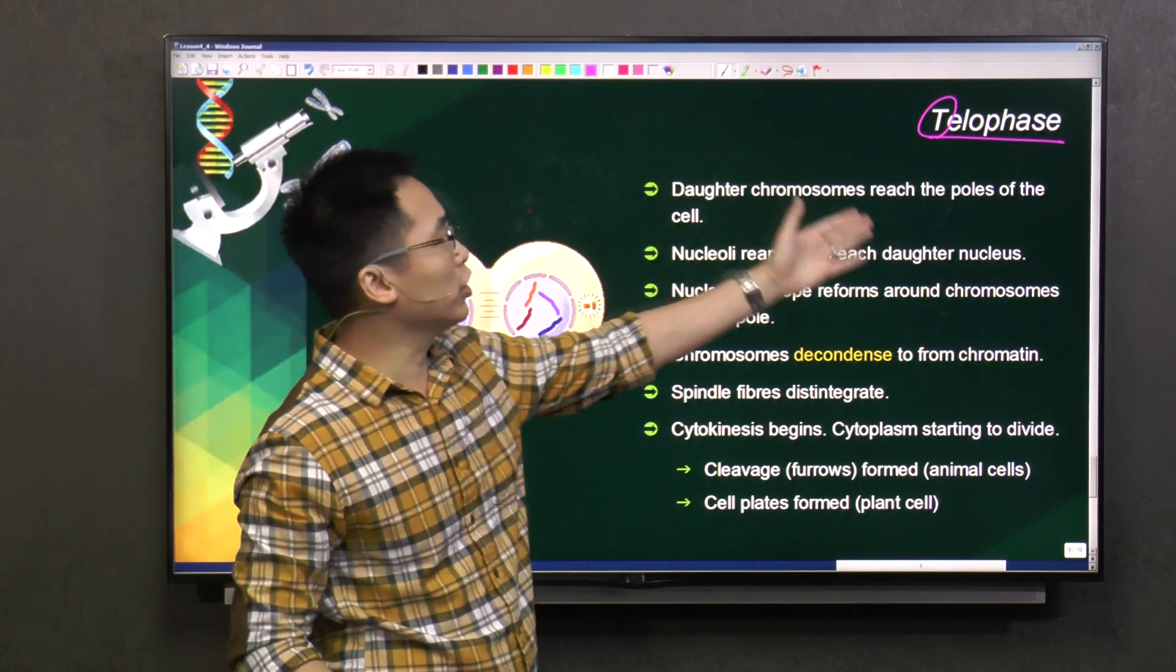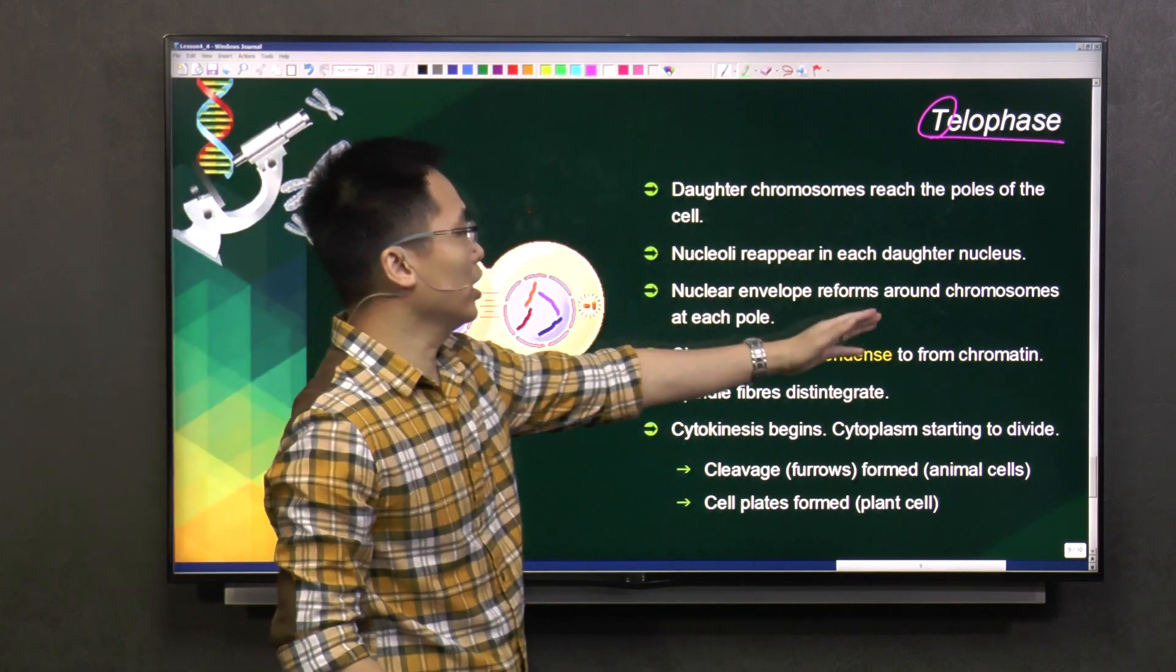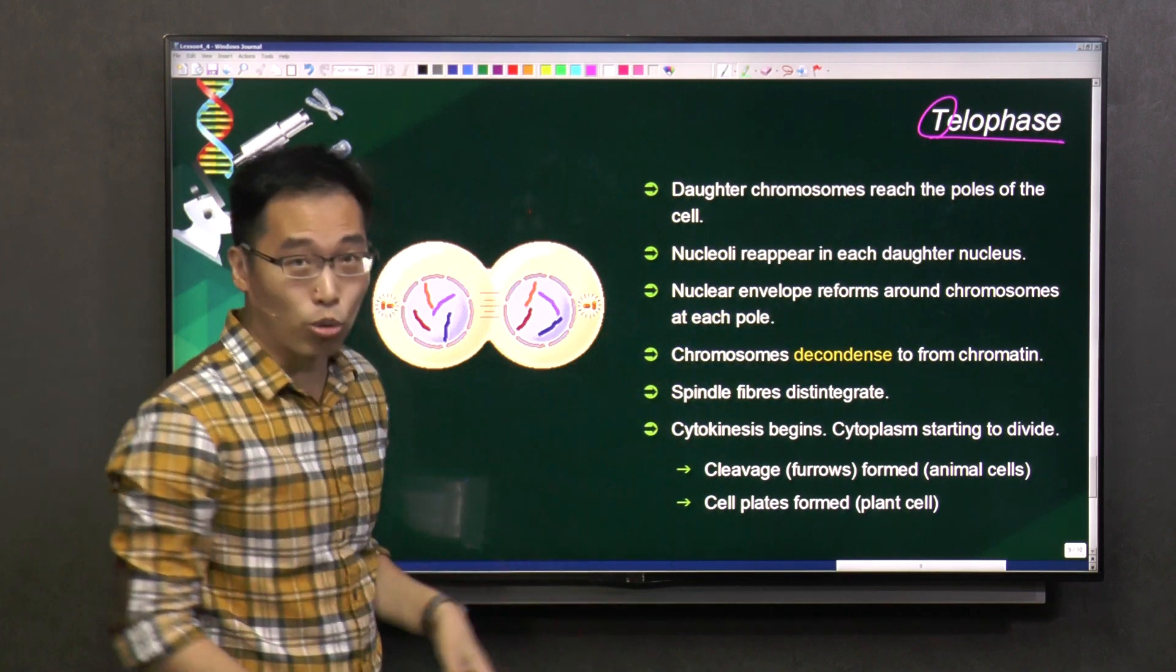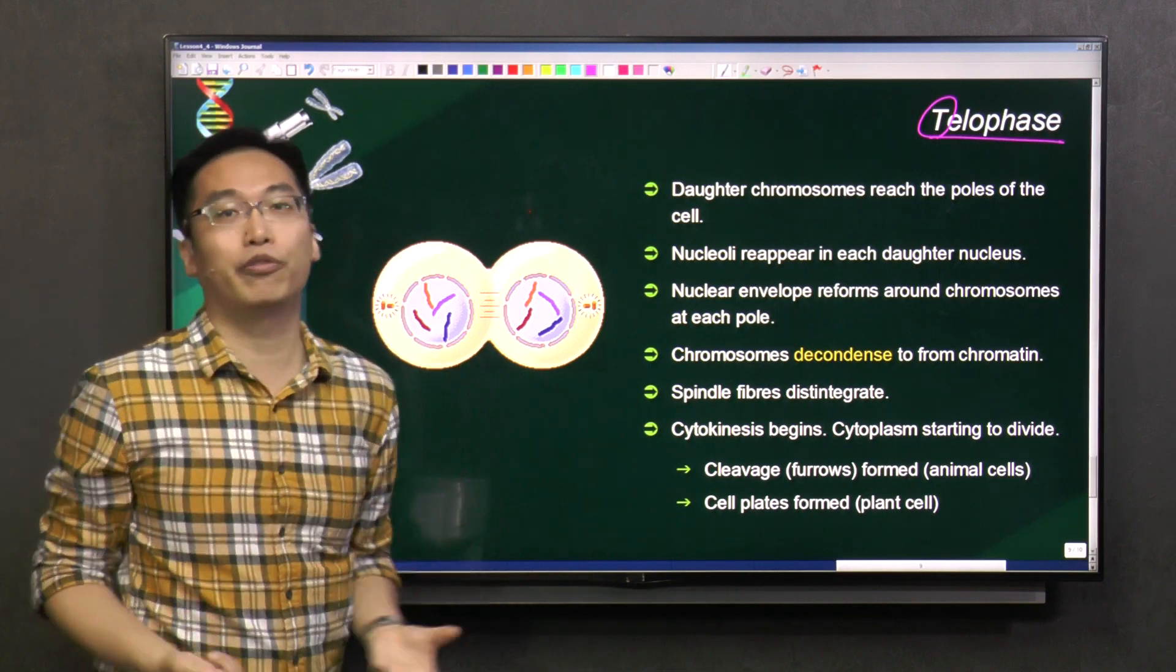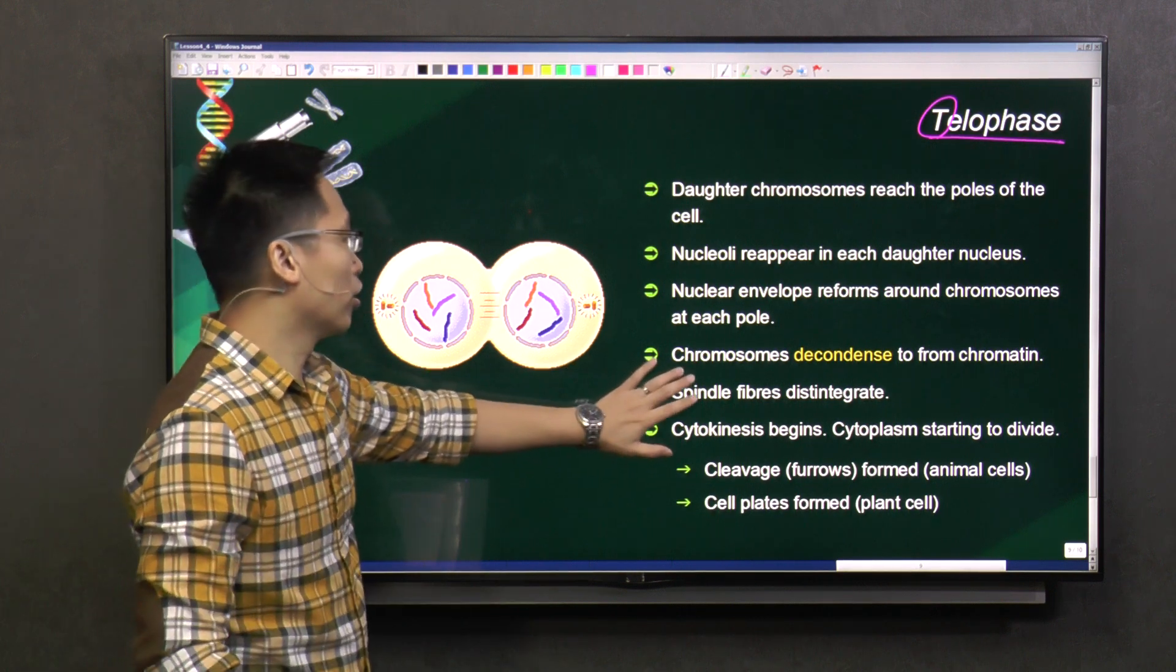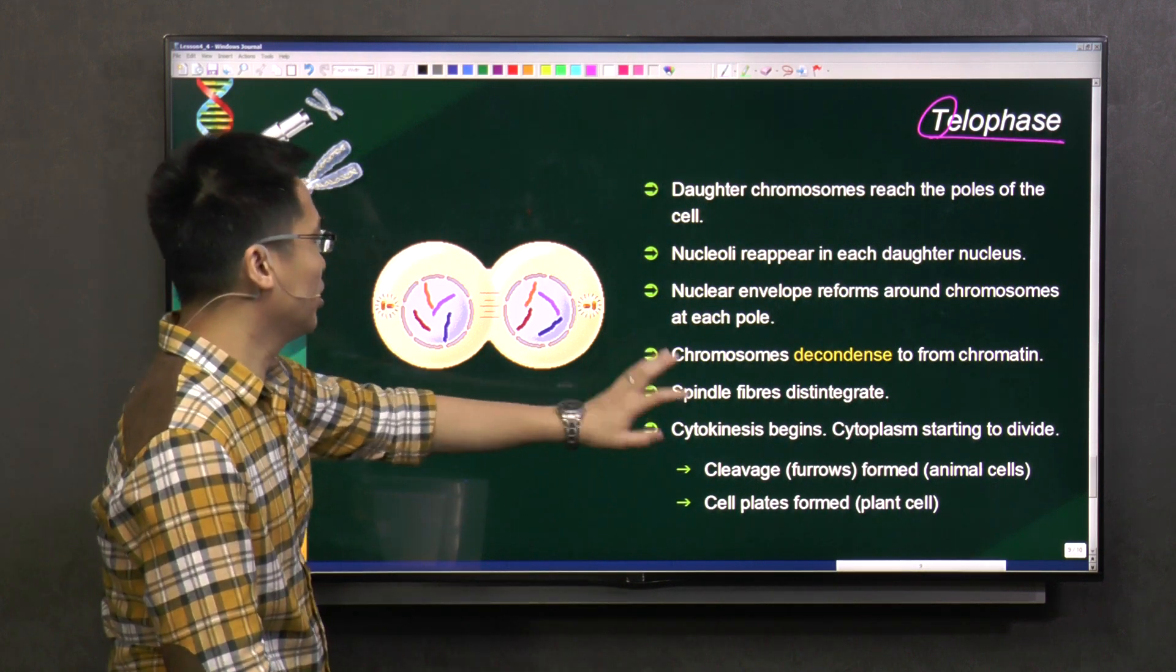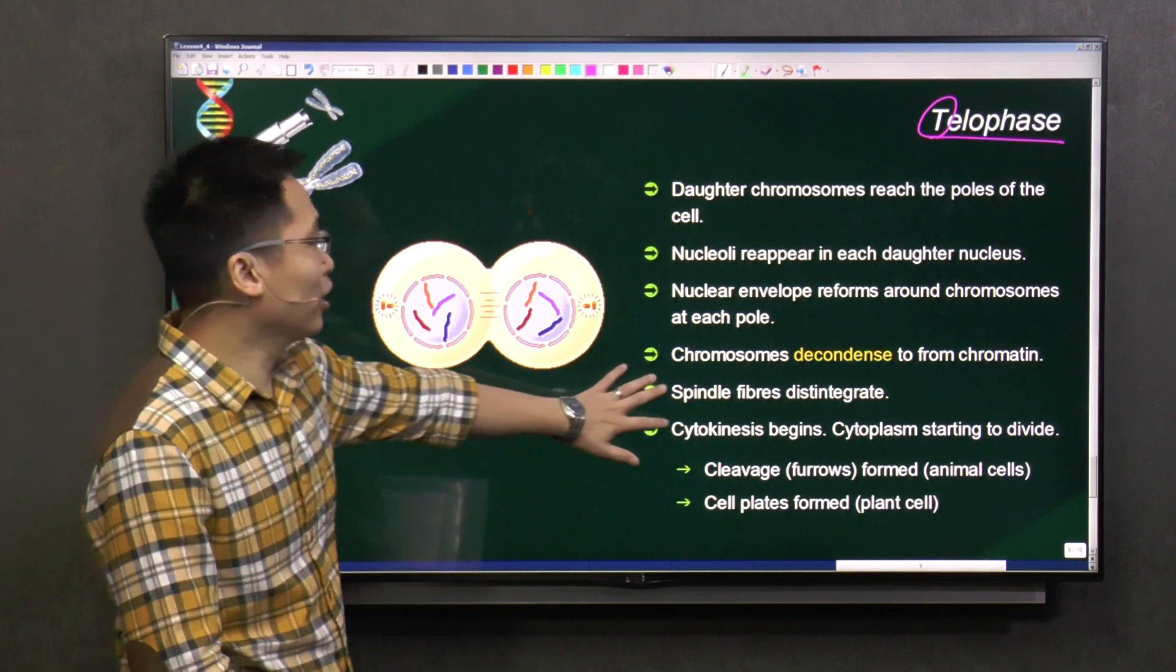So the daughter chromosomes have now reached the poles of the cell. They went to the two ends. The nuclei reappear in each daughter nucleus and the nuclear envelope also reforms around the chromosomes at each pole. They broke down so that the whole process can happen. They started, then now they must reform. Your nuclear envelope and all these other structures start to reform. The chromosomes decondense to form chromatin, so they are not in that compact structure anymore. And the spindle fibers disintegrate. Not needed anymore. Finish already, pull finish already.